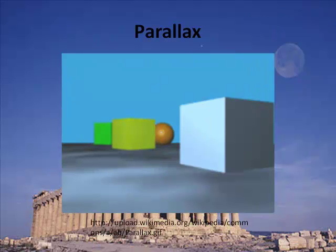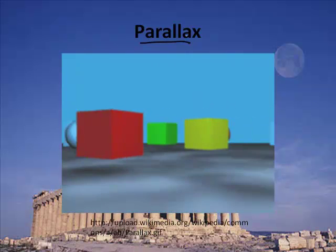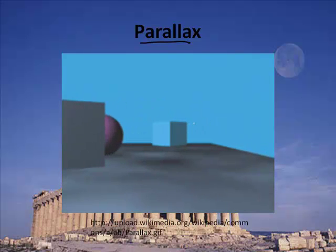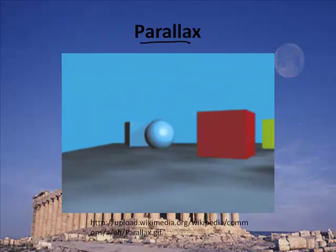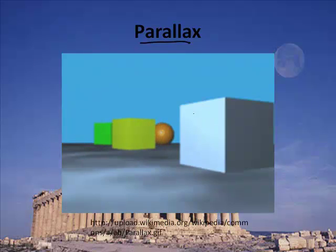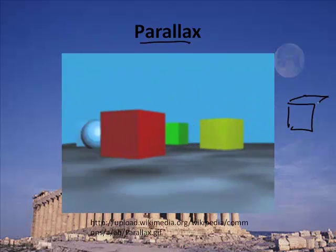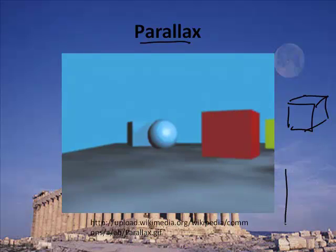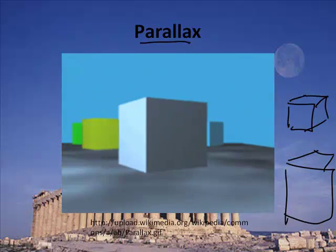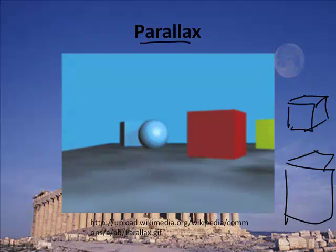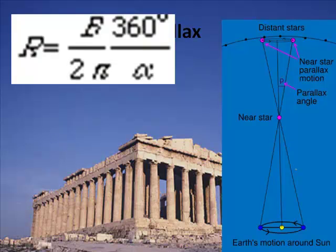That leads us to another discussion — something called parallax. If you look at this video clip, this is the idea of parallax. When you look at the objects, which one is moving faster — the ones in the front or the ones in the back? It appears that the ones in the front are moving faster, but the objects in the back are the same size. The ones in the front appear bigger because they're closer to the viewer. They really are moving the same speed. That's the concept of parallax, and parallax helps us determine some interesting things.